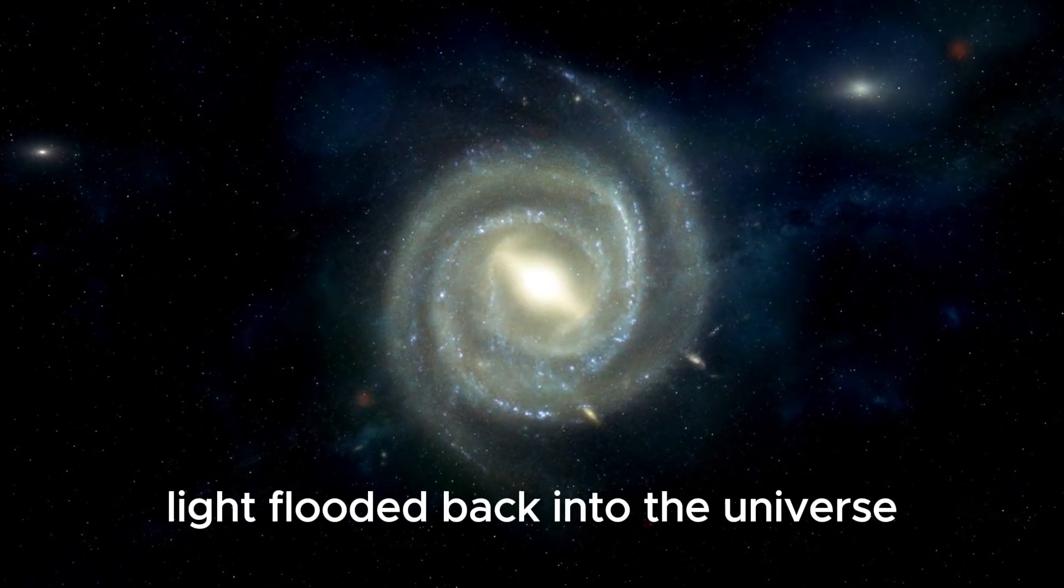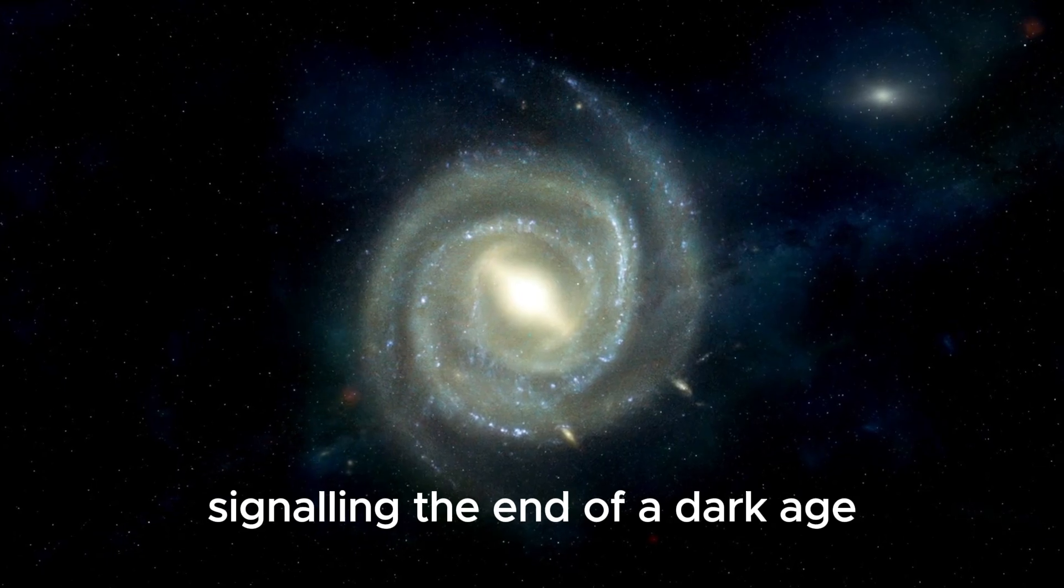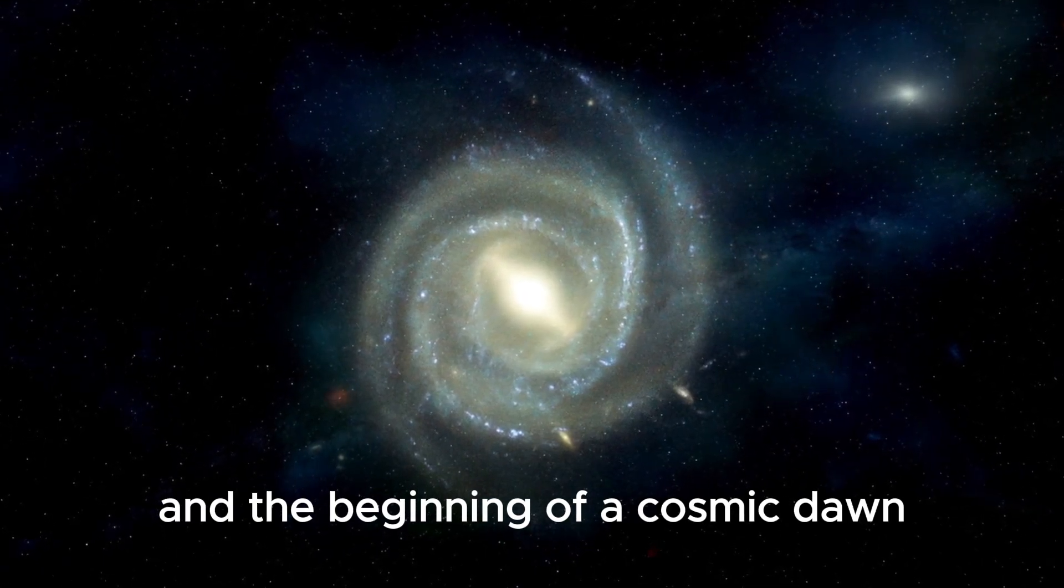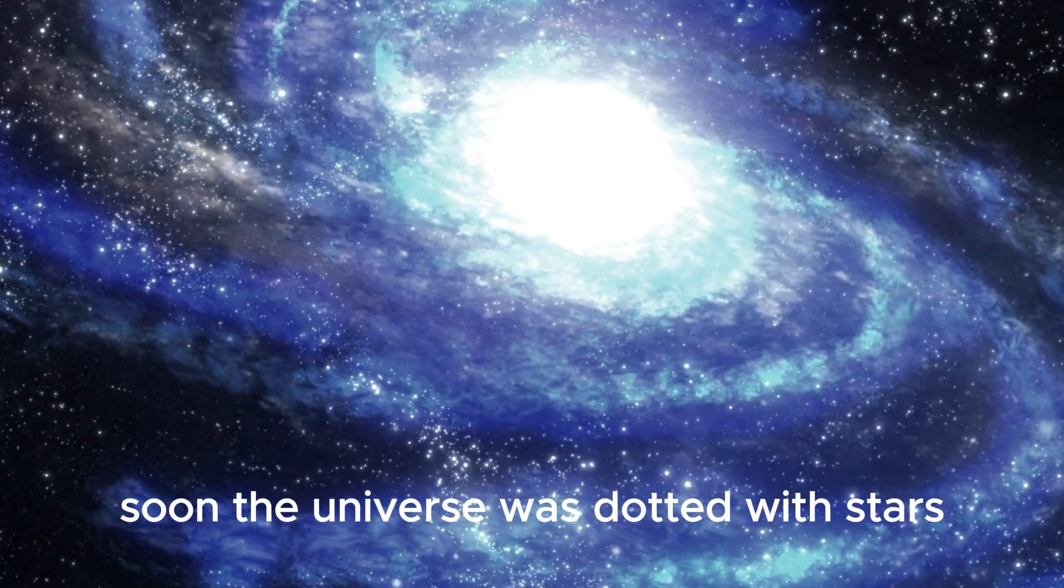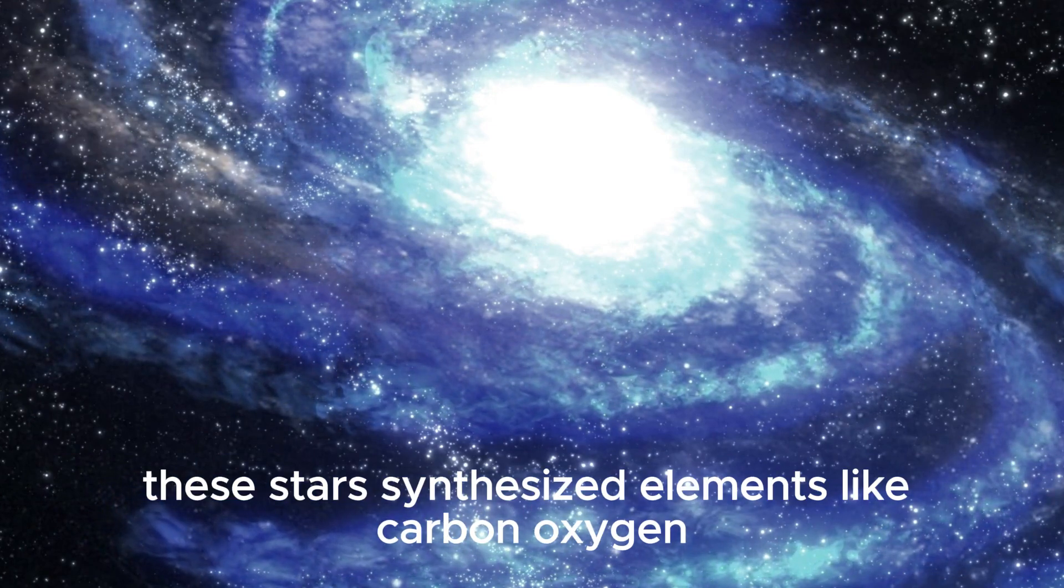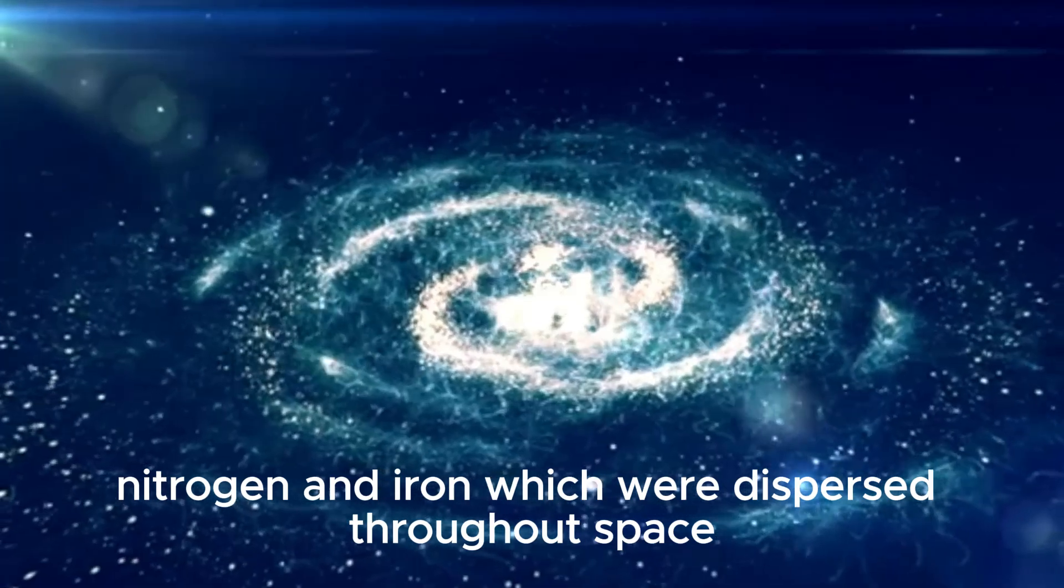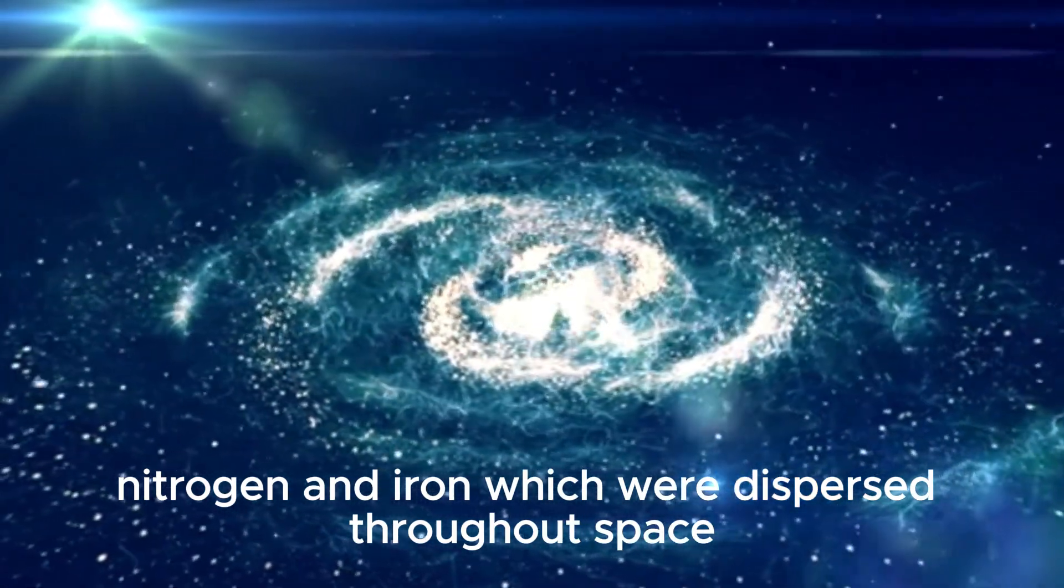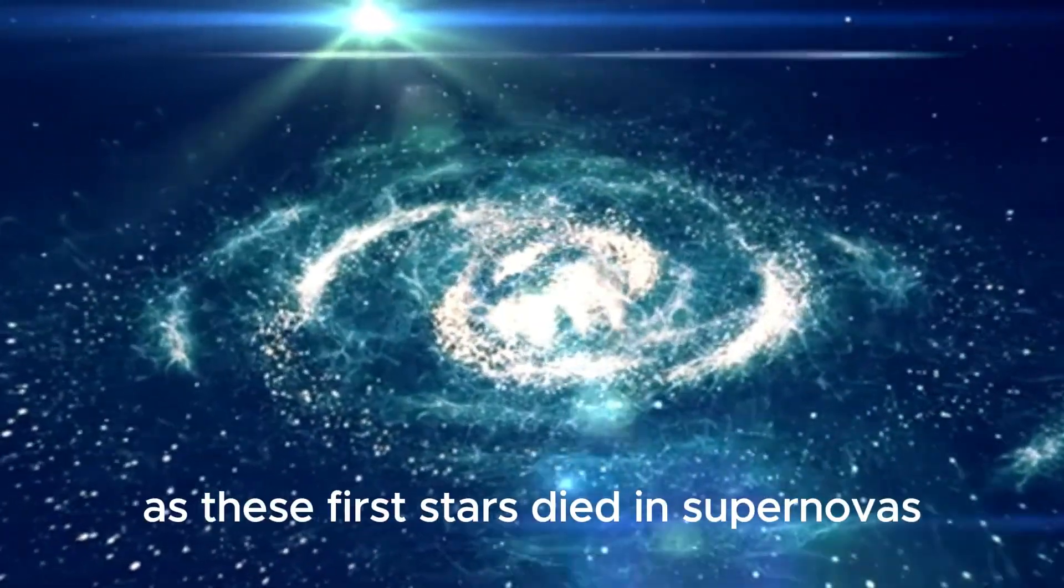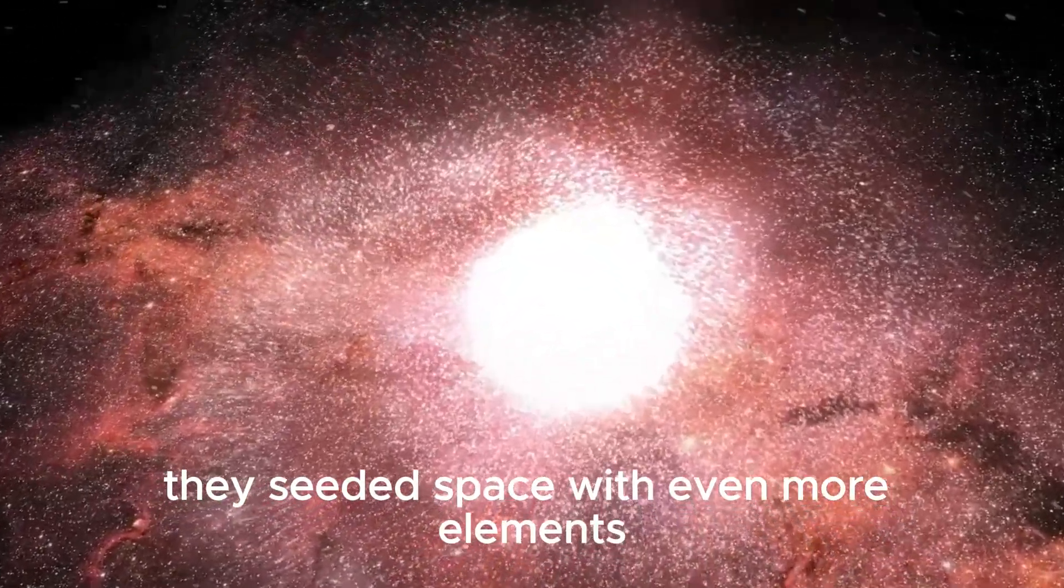From this newborn star, light flooded back into the universe, signaling the end of a dark age and the beginning of a cosmic dawn. Soon, the universe was dotted with stars gathering into the first galaxies. These stars synthesized elements like carbon, oxygen, nitrogen, and iron, which were dispersed throughout space. As these first stars died in supernovas, they seeded space with even more elements, perpetuating a cycle of birth, death, and rebirth.